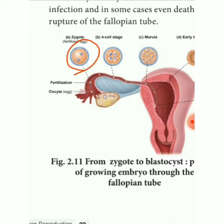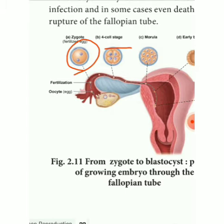These produce a four-cell stage, then an eight-cell stage. After 72 hours of fertilization, a collection of cells forms a berry-shaped cluster. When it is 16 or more cells it is called a morula. The morula is formed after 72 hours, and it starts to divide further, forming a cluster of cells still called a morula.